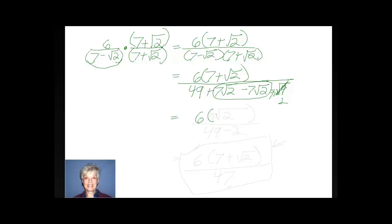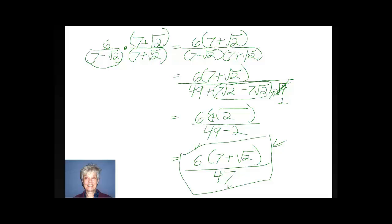Now the top is going to be 6 times 7 plus the square root of 2, over 49 minus 2. Thus the answer will be 6 times 7 plus the square root of 2 over 47. The reason you leave the top in factored form is that if the bottom had been some other number that 6, 3, or 2 could go into evenly, you could reduce. So you have to be careful — if there's a way to reduce your final answer you must do it. But for now, this is the correct answer. We have rationalized the denominator.